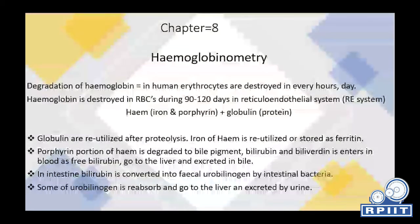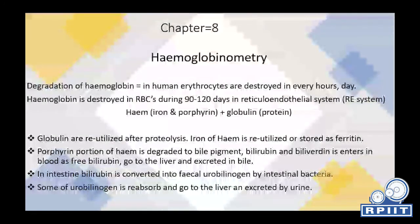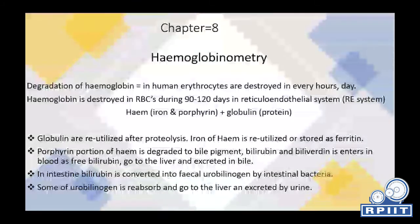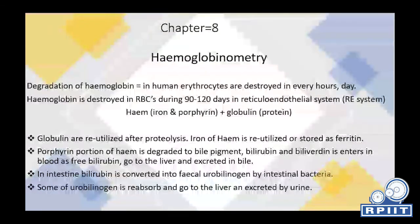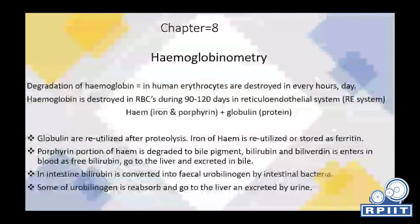The porphyrin product is degraded into bile pigment bilirubin, which is then converted into fecal urobilin by intestinal bacteria.